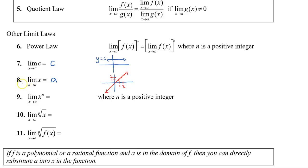Knowing law eight, we apply it to law nine. The limit of x to the power of n as x approaches a is simply a to the power of n — because the limit of x is already a, and by using the power law, we can apply the exponent after finding the limit inside. Remember that n is a positive integer.